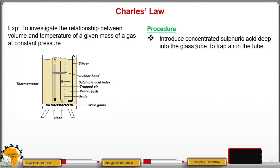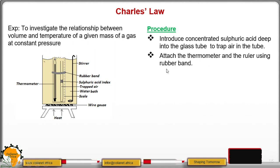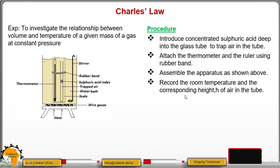We proceed as follows. Introduce concentrated sulfuric acid deep into the gas tube to trap air in the tube. Then, number two, attach a thermometer and a ruler using the rubber band as shown in the diagram. After that, assemble the apparatus as shown. Then record the room temperature and the corresponding height. Before you start heating, get the temperature at room temperature and then get the corresponding height.